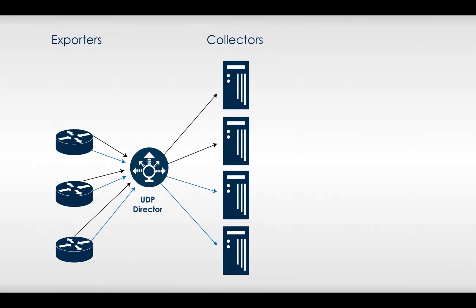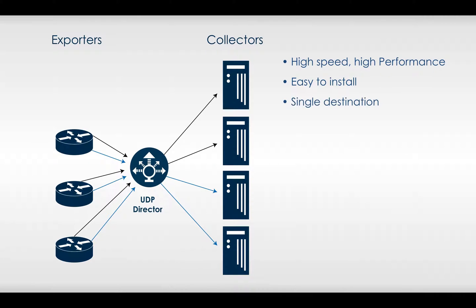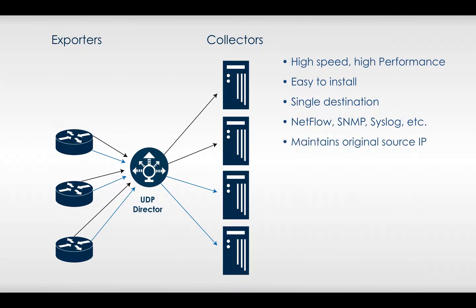With the UDP Director from Lancope, you can do just that. This high-speed, high-performance appliance is easy to install and provides a single destination for all UDP formats on the network, including NetFlow, SNMP, syslog, etc. It then simply forwards the packets to one or more solutions while maintaining the original source IP addresses.